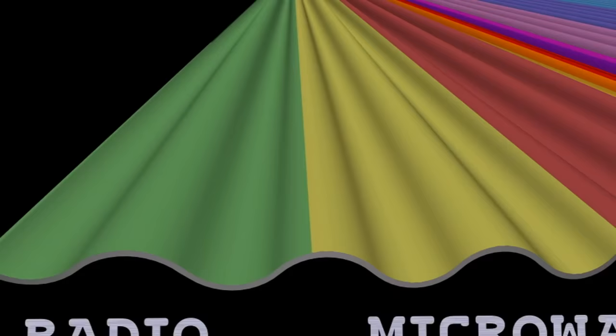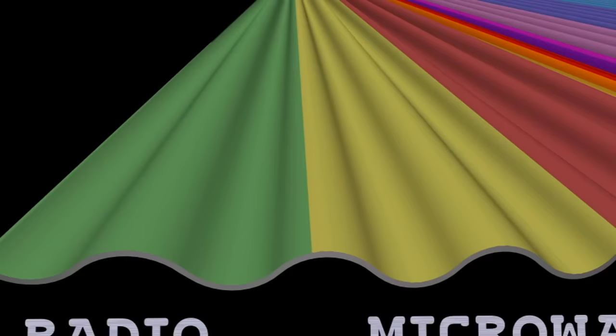Gamma rays are part of what we call the electromagnetic spectrum, which starts in radio at very long wavelengths, goes through optical, then through X-rays, and then gamma rays are the very highest energy form of that type of radiation.